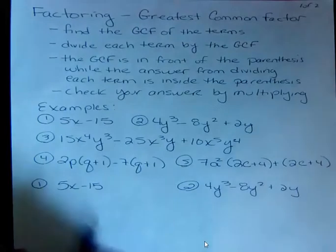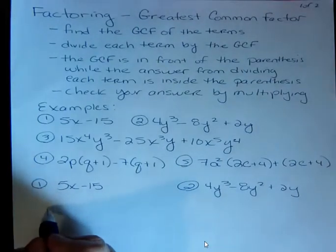Well, they each have a 5 in them. So the greatest common factor is going to be 5. So I'm going to divide, I'm going to put my 5, that's going to go outside my parentheses.